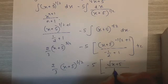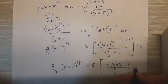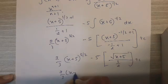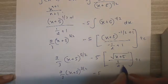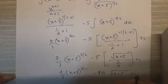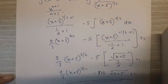And now the final answer would be 2/3 times x plus 5 raised to 3/2, minus 5. Now we can take 2 in the numerator, the reciprocal of the denominator, so it will be minus 10 root of x plus 5, plus c. And that's the final answer.